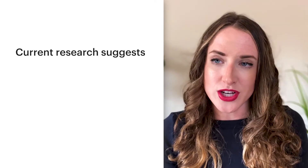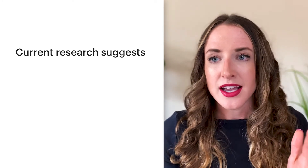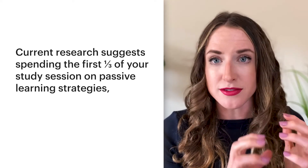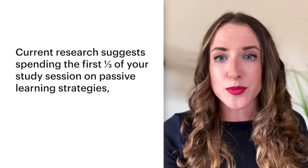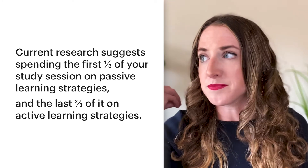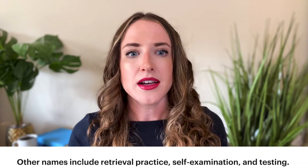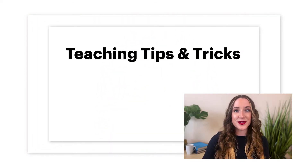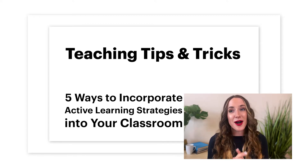While the exact proportions depend on a number of factors, current research suggests that if you have a study session planned, a good rule of thumb is to take the first third of that study session and use passive learning strategies — like skimming the textbook or reading. Then for the rest of the study session, use active learning strategies: practicing speaking aloud, creating your own sentences. Related terms you might know include retrieval practice, self-examination, or simply testing. Stay tuned — in our next video we'll look at five active learning activities you can include in your classroom to combat the fluency illusion.